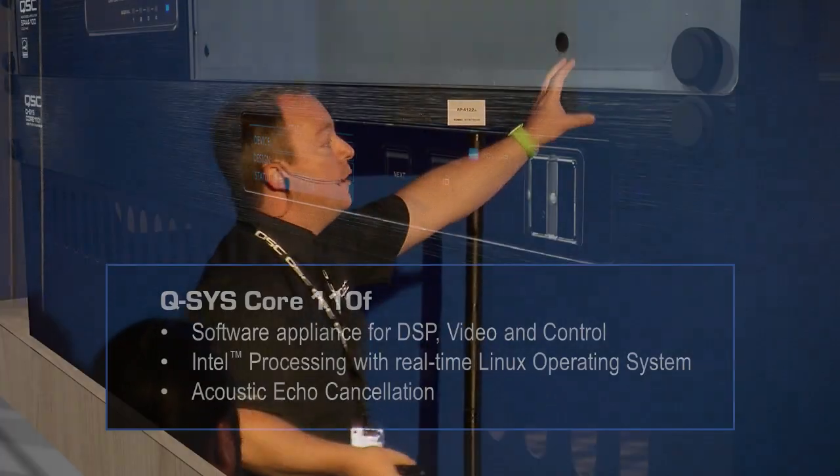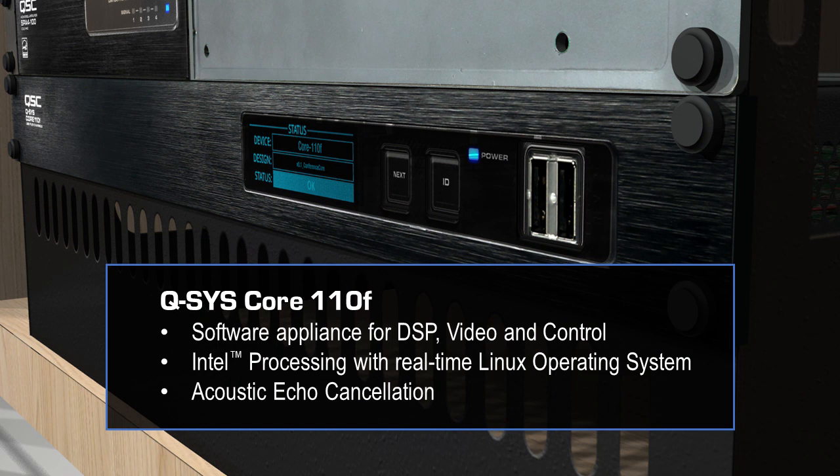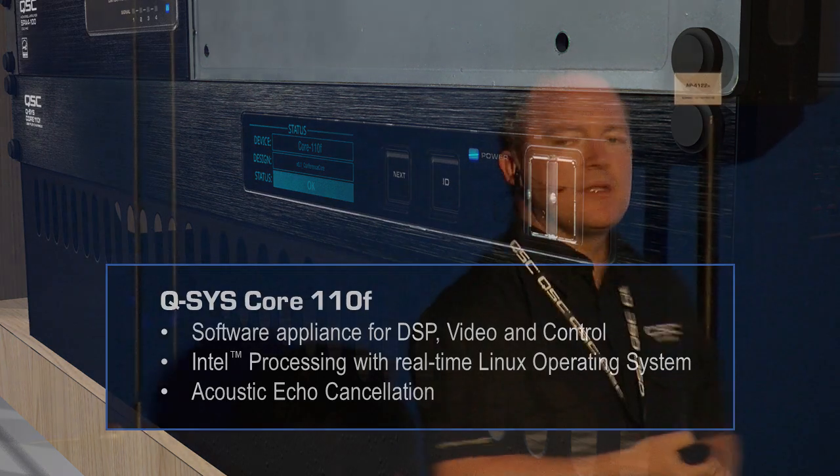This is our Q-SYS Core 110F processor, which we launched at Infocom last year. It is a software appliance for DSP, video, and control. People think Q-SYS is a DSP — yes, it can do that, but that's not all it does. So I want to discuss what I mean by software appliance.